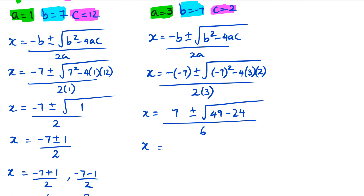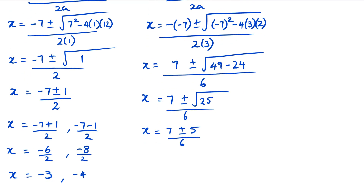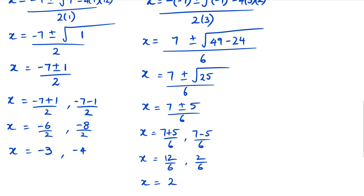Carrying on, we get seven plus or minus the square root of 49 minus 24, which is 25, divided by six. So x is equal to seven plus or minus five over six, since the square root of 25 is five. Now we have two different answers: seven plus five over six gives 12 divided by six, which is two; and seven minus five over six gives two divided by six, which simplifies to one third. Those are our two final answers.